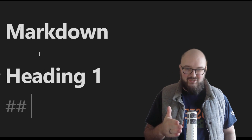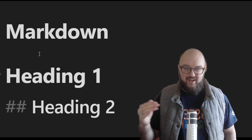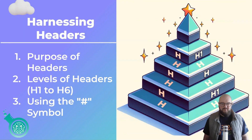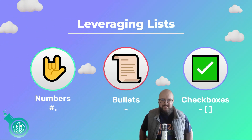It's super simple: just the hashtag symbol and a space, then you add an additional hashtag for each heading level you want to go below. So heading two would be hashtag hashtag space, and so on. Super simple.